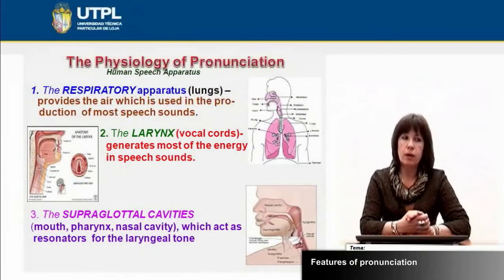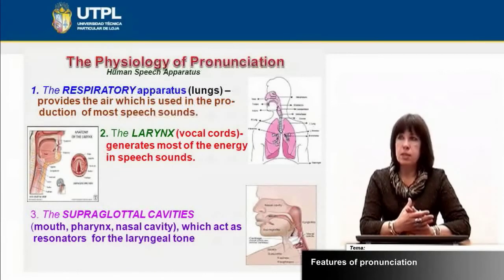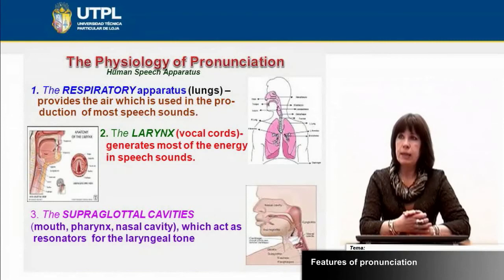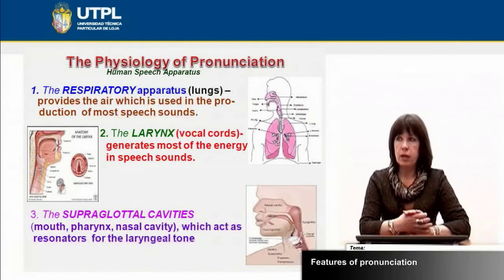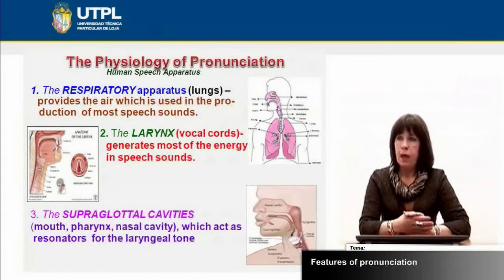When speaking about pronunciation, we need to know how sounds are produced — the physiology of pronunciation. The human speech apparatus consists of three main groups. First, the respiratory apparatus: the lungs provide air used in the production of most speech sounds. Second, the larynx or vocal cords, where vocal cords generate most of the energy in speech sound and are very important in speech production. Third, supraglottal cavities — mouth, pharynx, and nasal cavities — which act as resonators for the laryngeal tone and are very important in producing speech sounds.